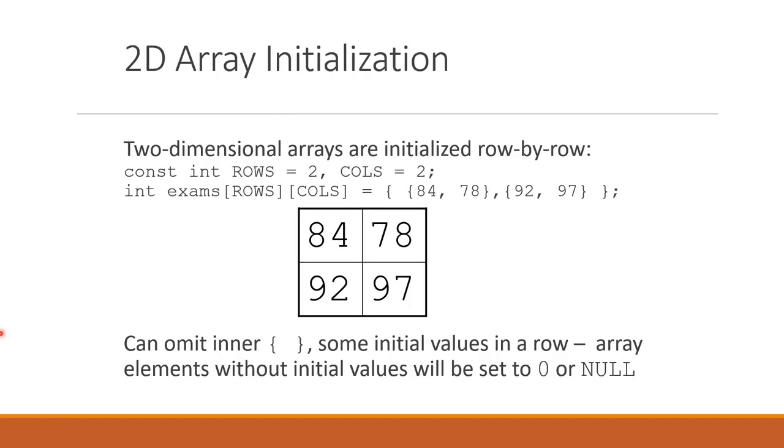Here's another way of looking at it. I'm using a constant to declare. I've got a constant that says there are two rows and a constant that says there are two columns. Then I declare an integer array called exams with rows and columns. What I'm showing here is how to initialize it. I want you to connect this 84, 78 with the first row. Before we had curly braces and just put our numbers in there, but now we're going to put rows inside another set of curly braces.